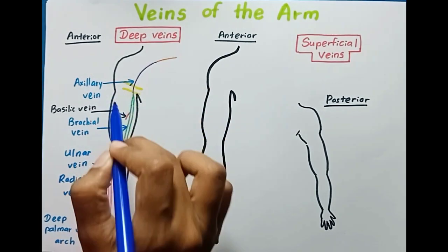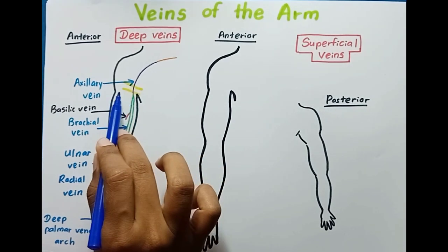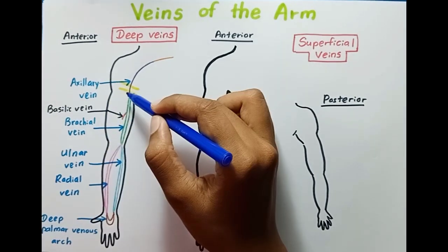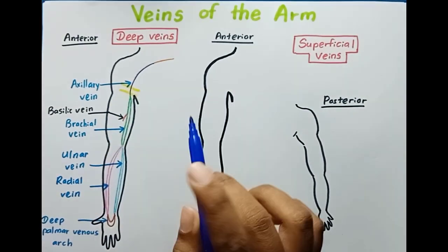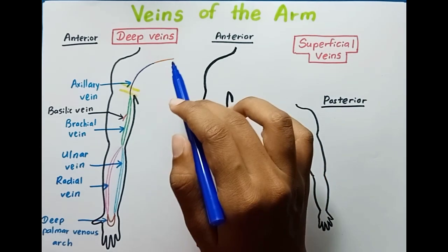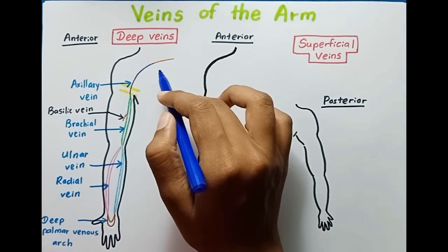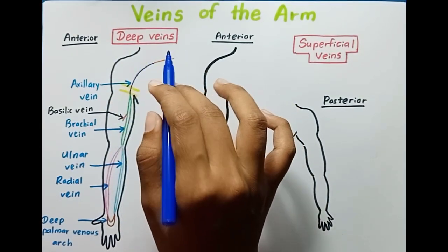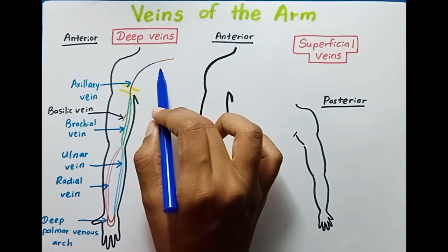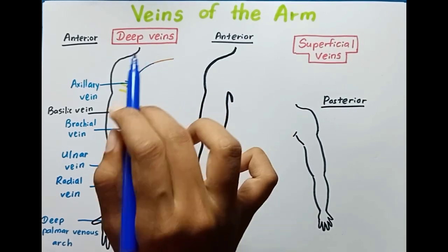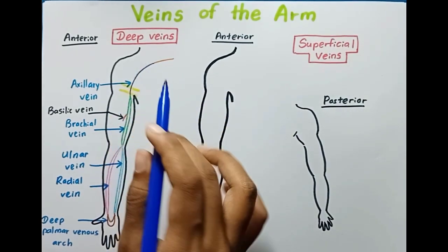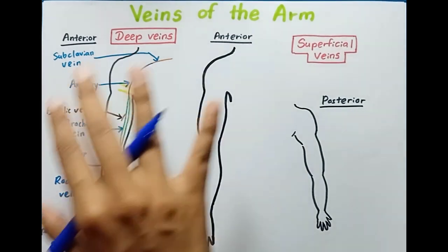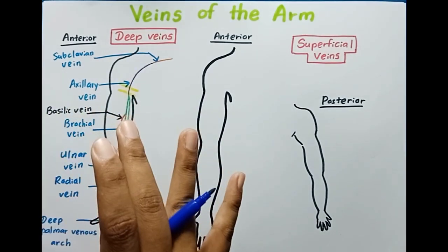The axillary vein begins at the lower border of the teres major muscle and travels through the axilla. After the outer border of the first rib, it continues as the subclavian vein. In this orange color line you can see the subclavian vein.